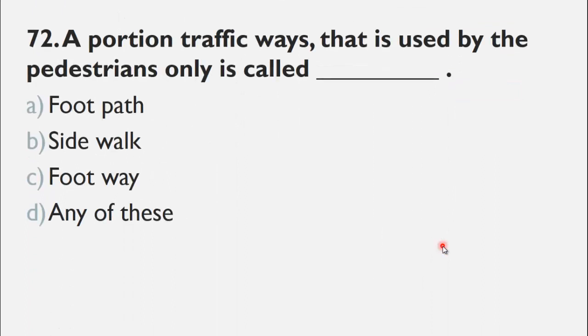MCQ number 72 is: A portion of traffic way that is used by the pedestrians only is called ___. A) footpath, B) sidewalk, C) footway, and D) any of these. The three choices are different names of the same thing, so the right choice for this question is D, any of these.